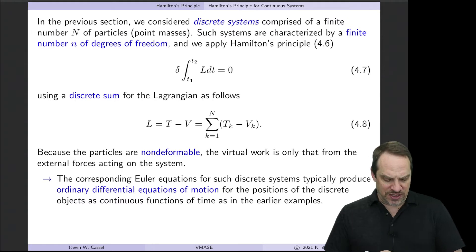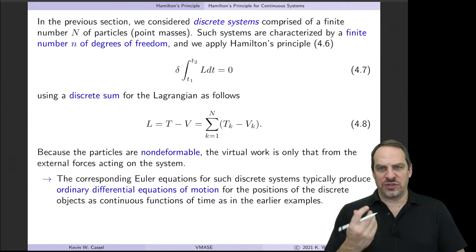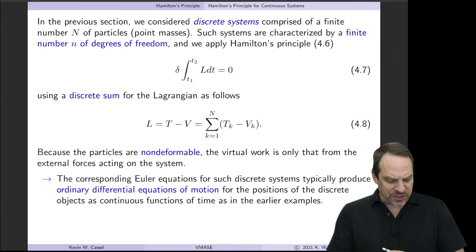So you'll see how they're the same and how they're different. So first, looking at discrete systems, we have a finite number, capital N, of particles. These are point masses, and there's a finite number of them. There's also a finite number of degrees of freedom, little n. They aren't necessarily the same, but they're both finite.